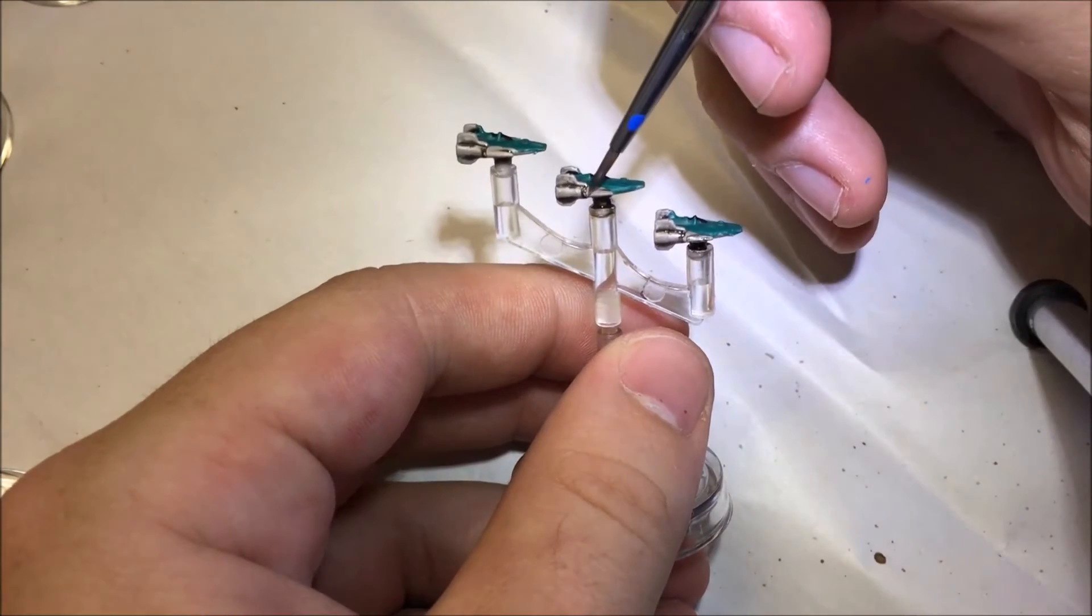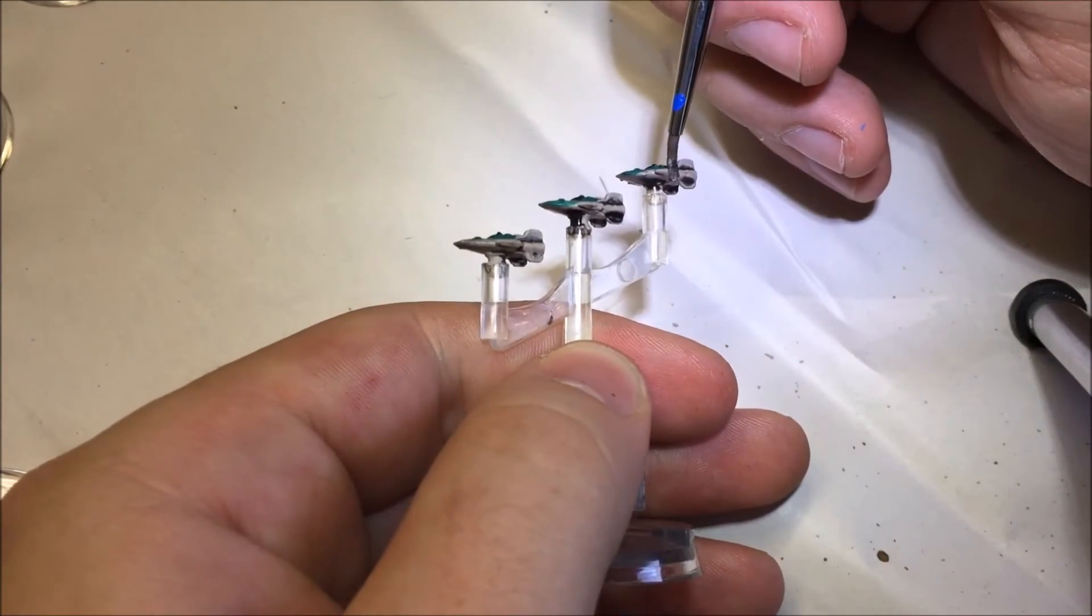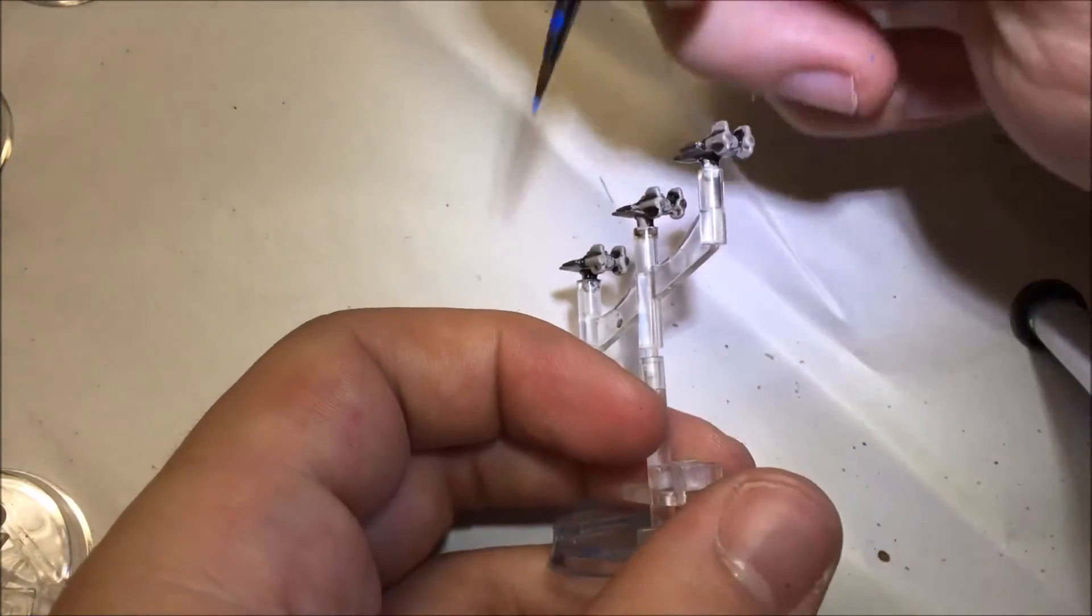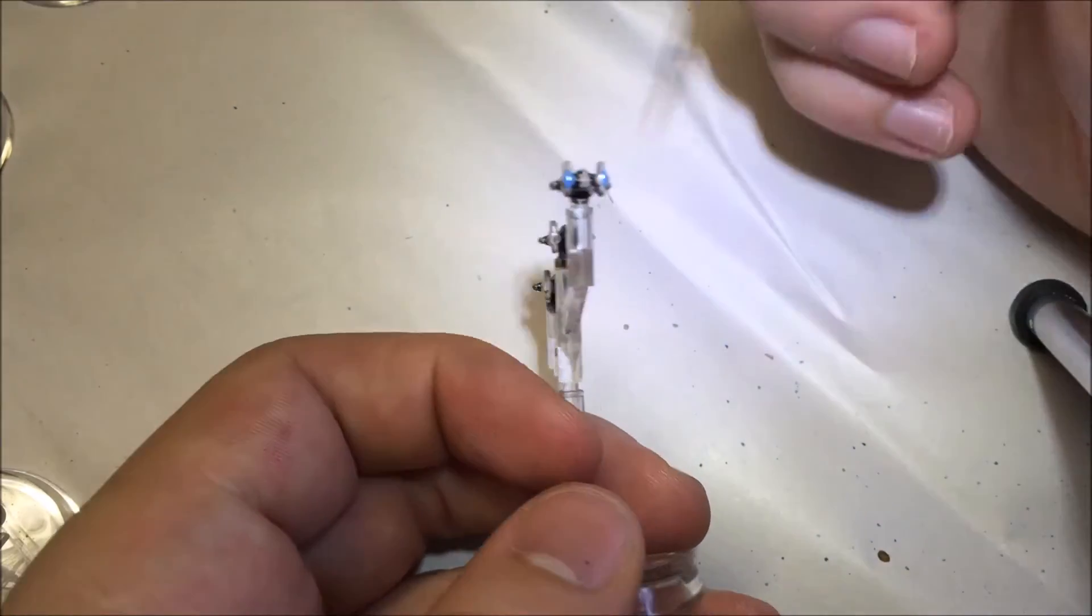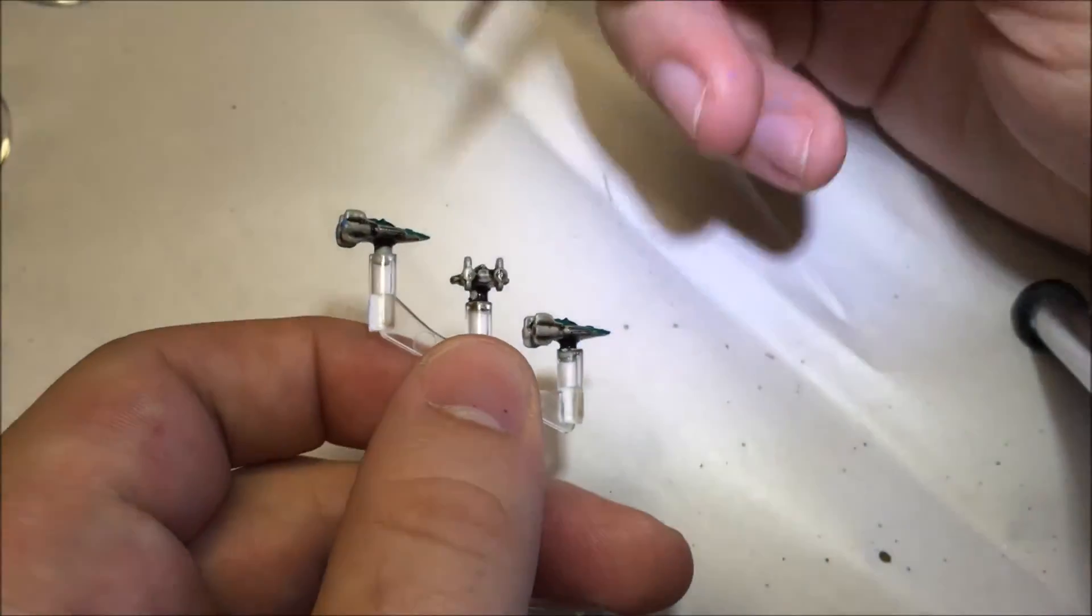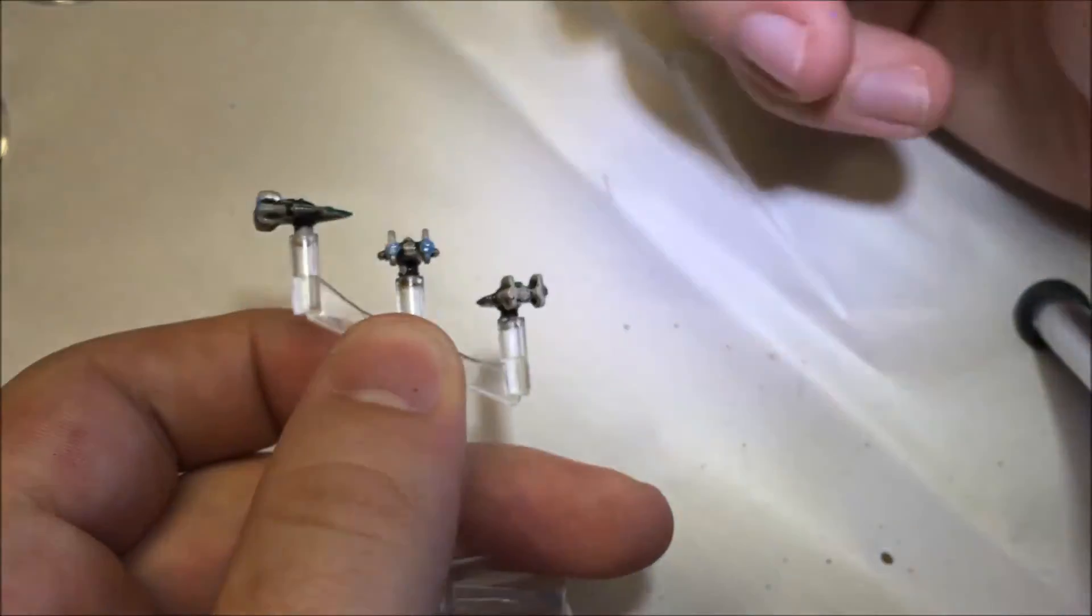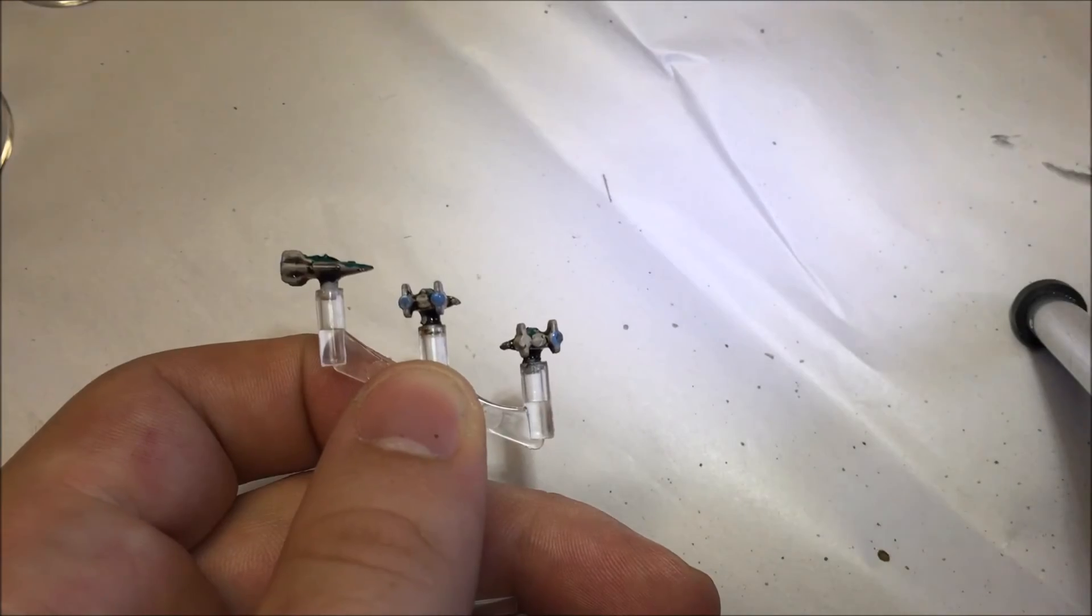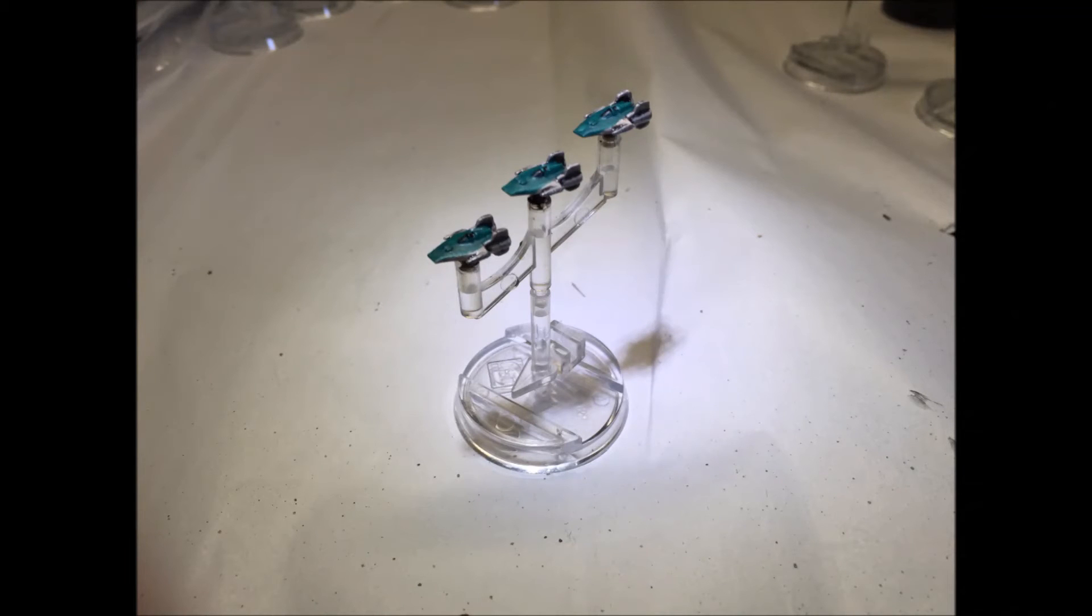Apply a metal colour to the wingtips where the weapons are. Finally apply blue to where the exhausts are. There we have it, a completed A-Wing.